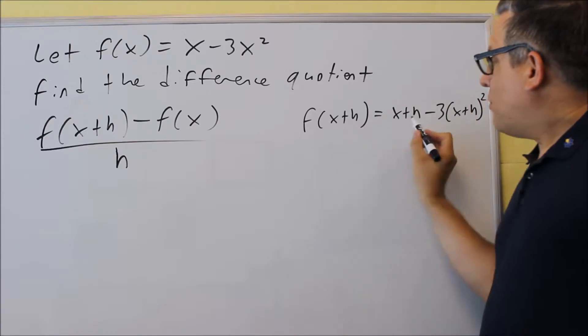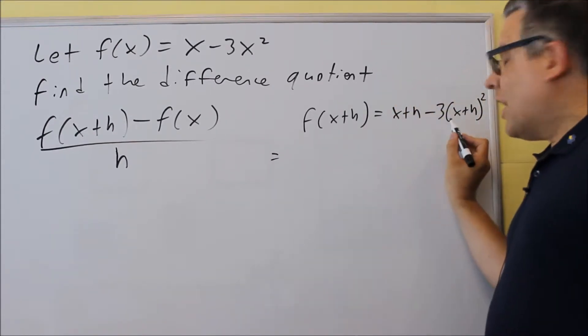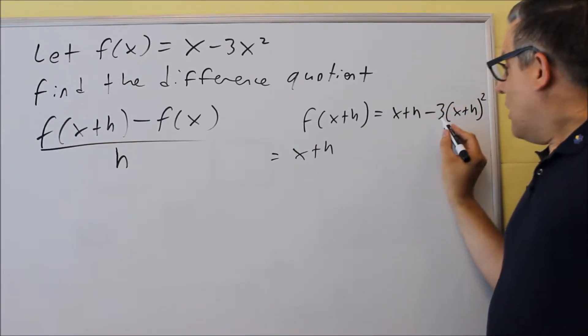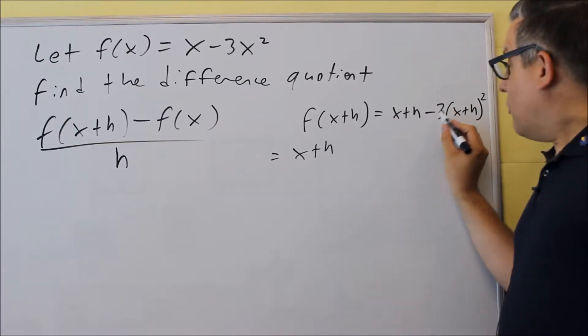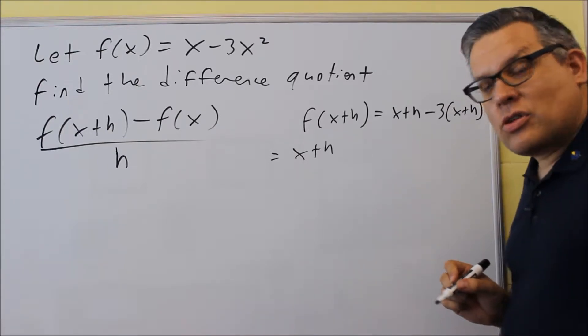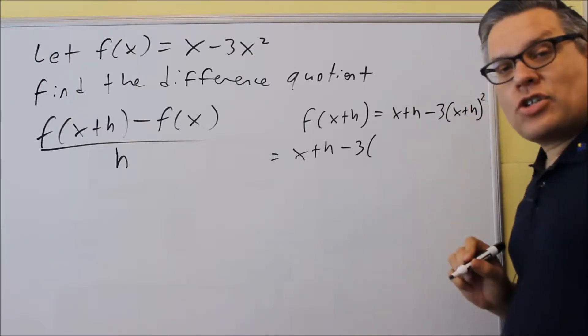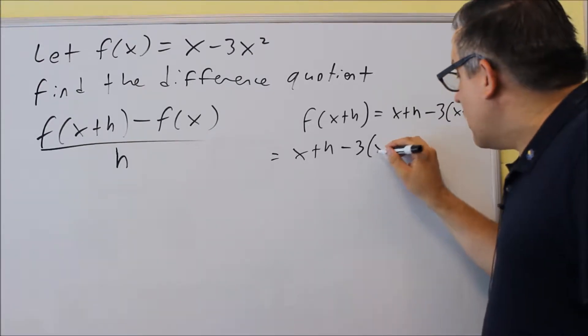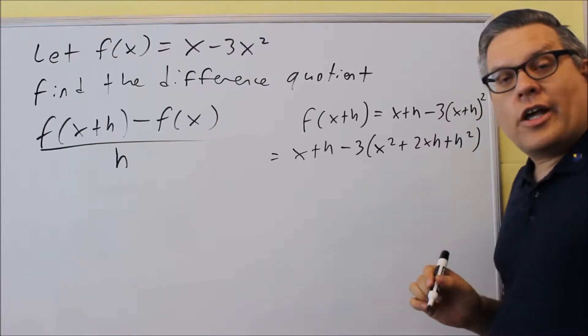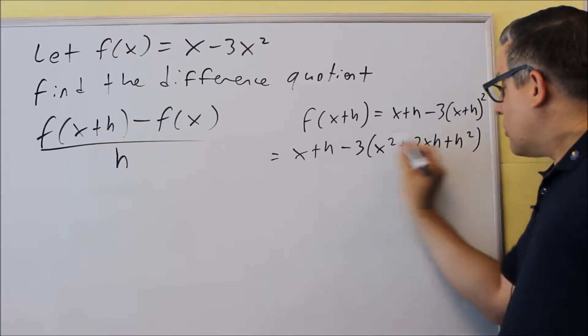f(x+h) means I put that in for each of these. So let's expand this one. Now you have to remember your order of operations when you do this. So x+h is the same. Now we're not allowed to take negative 3 and multiply it inside each of these because the order of operations says that the exponent comes first. So we want to begin with that part. So I'm going to do -3, and then (x+h), I'm going to expand that one. So I get x²+2xh+h². I'm just multiplying (x+h) times (x+h) together to get this one here.